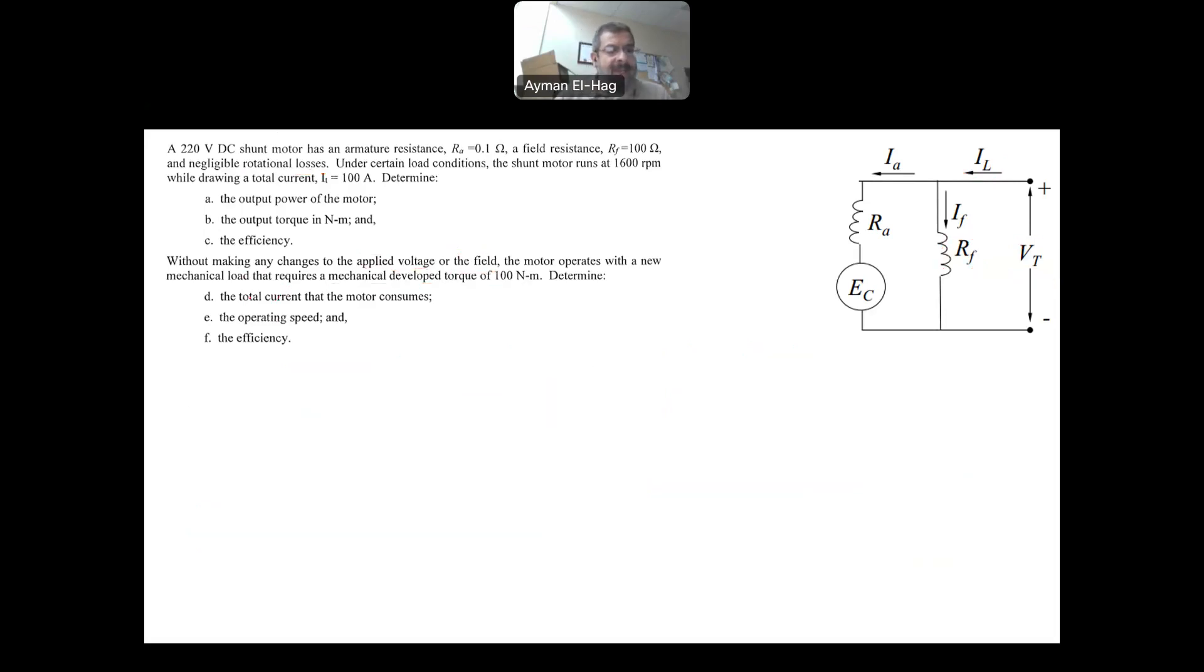Then it says here, find the operating speed. Now, to find the speed at a different condition, you have to use the EC here, or the EA, it's the counter EMF. It is the same as EA, or sometimes it's called EB, the back EMF, so all of them means exactly the same thing. So in this part here, we want to find the operating speed at that condition. This is another relation, this is EC is equal to another constant times, basically, your IF, the flux, times the speed. So this is the relationship.